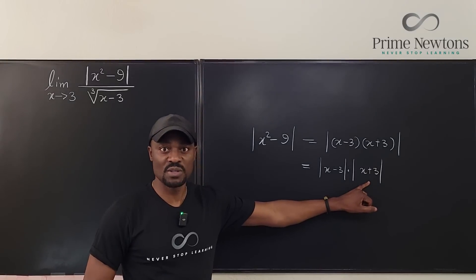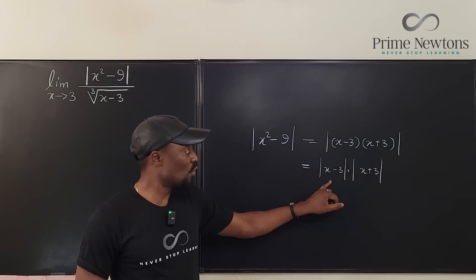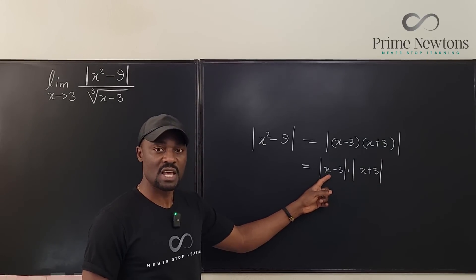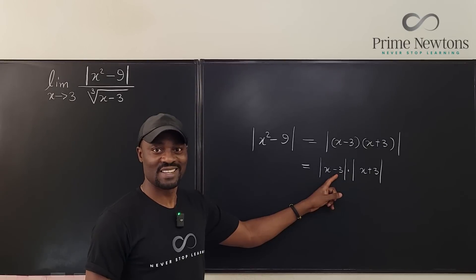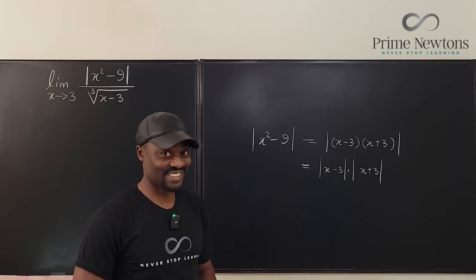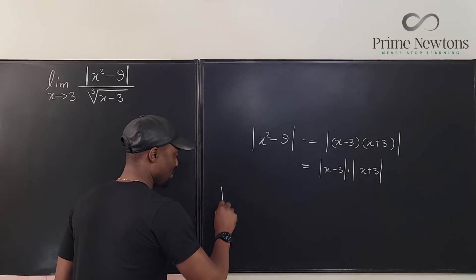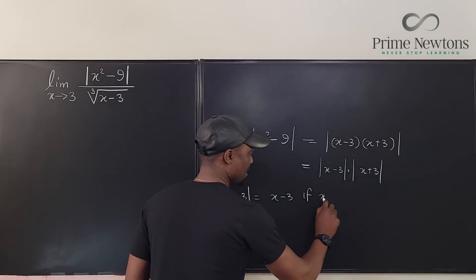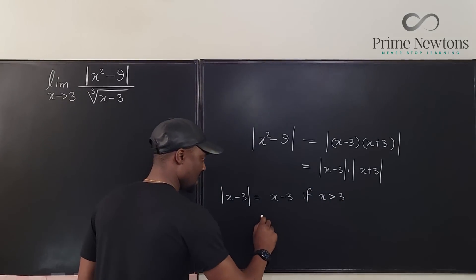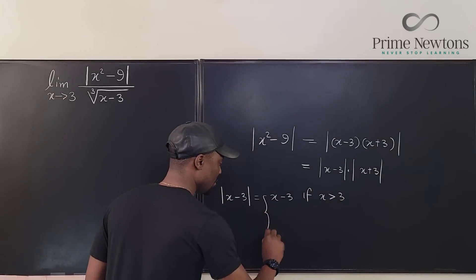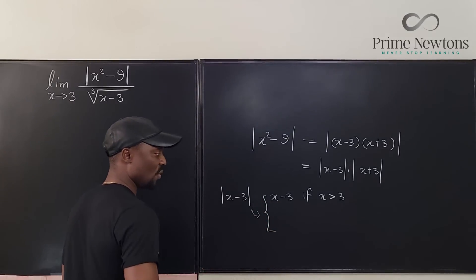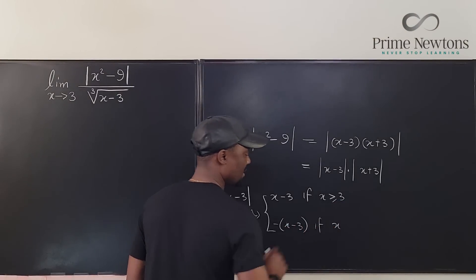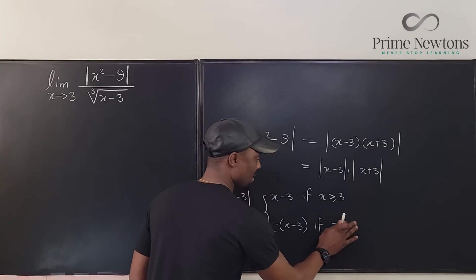We can ignore |x+3| — it's |x-3| that's going to be a problem. This product can be what you see, or it could be the negative of what you see when x is less than 3. Recall that |x-3| equals (x-3) if x is greater than or equal to 3, or negative (x-3) if x is less than 3.